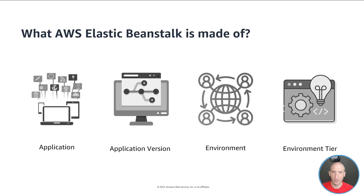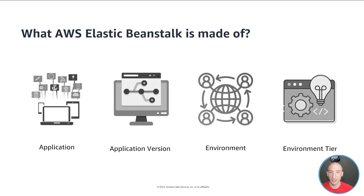The last concept for Elastic Beanstalk is the platform. A platform is a combination of an operating system, programming language runtime, web server, application server, and Elastic Beanstalk components. You design and target your web applications to a platform. Elastic Beanstalk provides a variety of platforms on which you can build your applications — for instance, .NET applications running on Windows, or .NET Core and .NET 6 applications running on Linux.